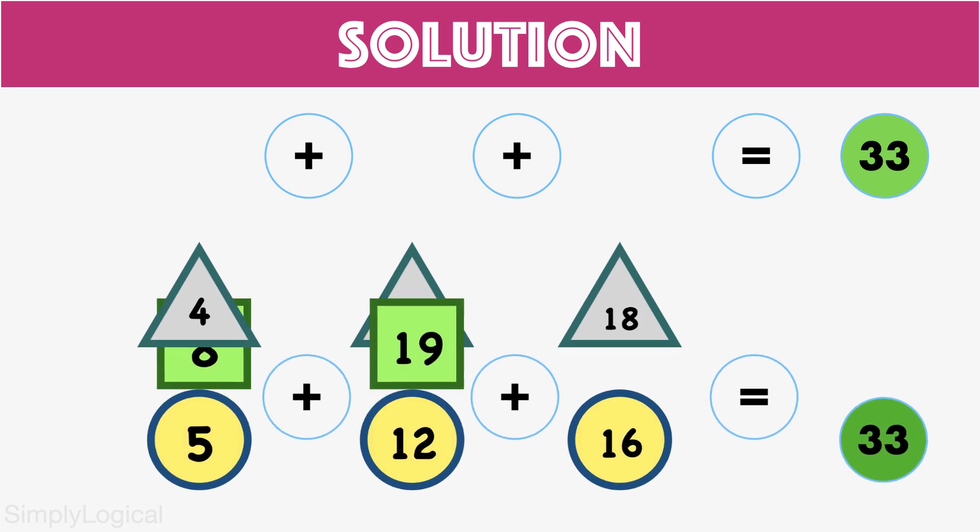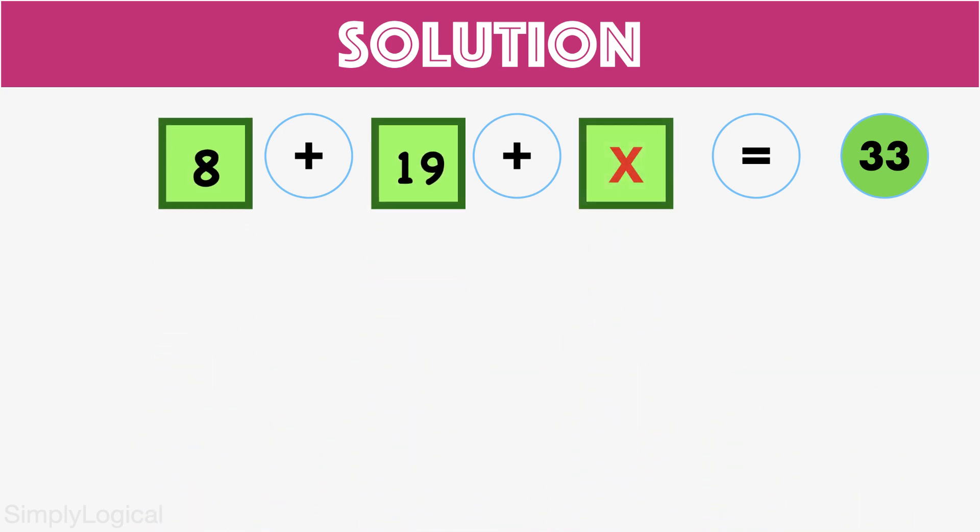In the final row, let the missing number be x. Hence the equation becomes 8 plus 19 plus x equals 33. After solving for x, x becomes 6. Thus the missing number is 6. By following these simple methods we can find the missing number accurately and in less time.